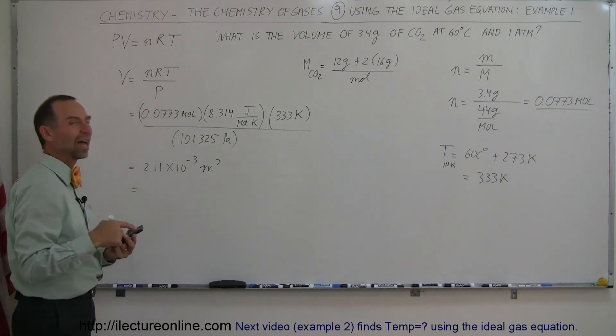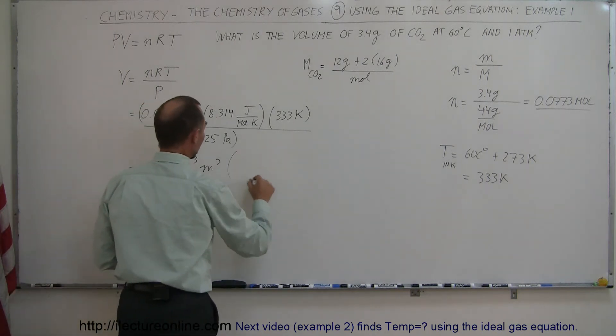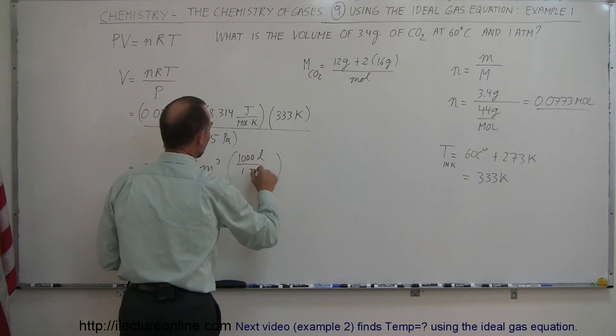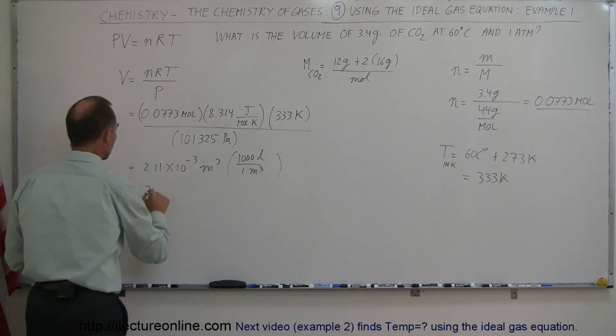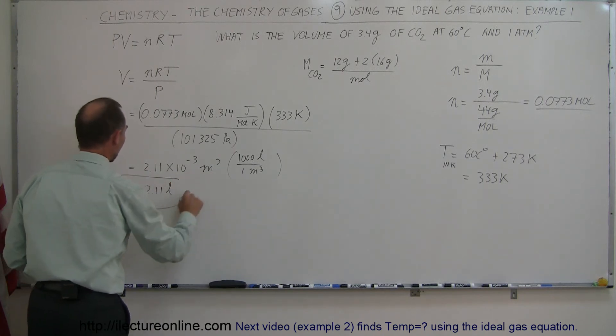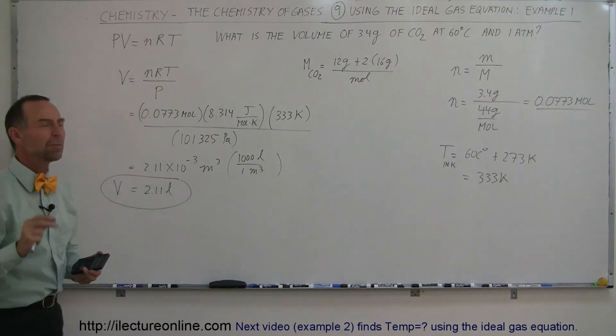And of course, if we convert that to liters, there's 1,000 liters per cubic meter. So that's 1,000 liters per 1 cubic meter. And so that gives us 2.11 liters. And that's the volume of that particular gas. Now, does that make sense?